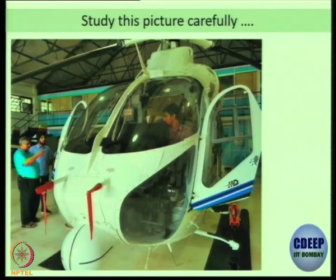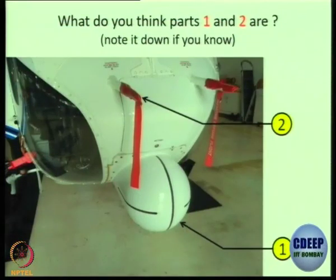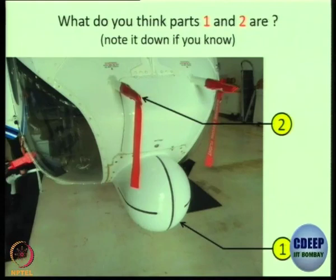Let us have a look at this picture and see if you can find some familiar components. What do you think these are? How can you say it is a Pitot tube? So anything in the front of the aircraft is a Pitot tube? It could also be a Pitot static tube. Is there a difference between a Pitot tube and a Pitot static tube? Do not worry, we will study about it.